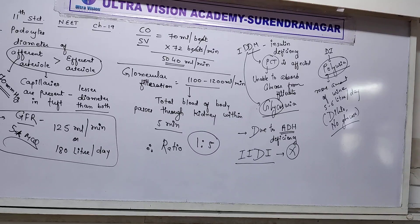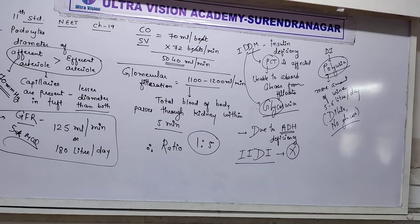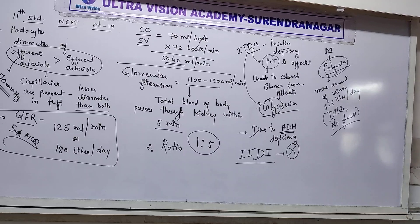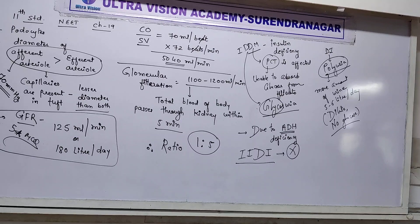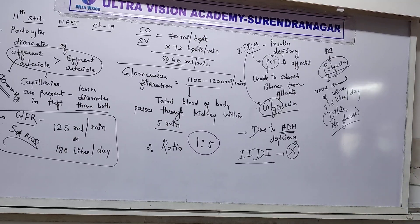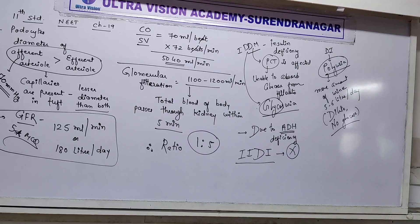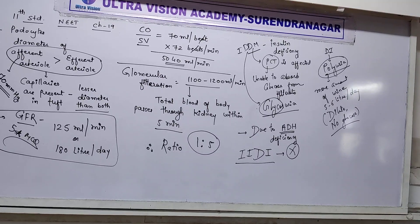Treatment for diabetes insipidus involves administration of ADH or vasopressin to stimulate more reabsorption of water from the collecting tubule and distal convoluted tubule, so the person becomes rehydrated. The person should also consume more liquid-containing food.